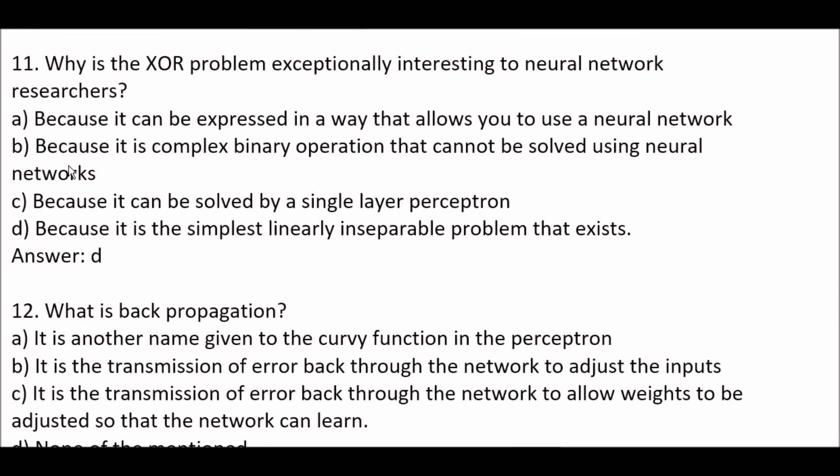Next question: why is the XOR problem exceptionally interesting to neural network research? Option A: because it can be expressed in a way that allows you to use a neural network. Option B: because it's a complex binary operation that cannot be solved by using neural networks. Option C: because it cannot be solved by a single layer perceptron. Option D: because it's the simplest linearly inseparable problem that exists. The right answer is option D — because it's the simplest linearly inseparable problem that exists.